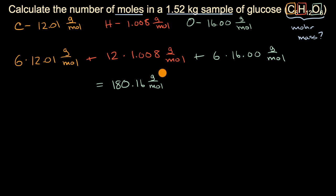And we could say grams of glucose, C6H12O6, per mole of glucose, C6H12O6. And then we can use this 1.52 kilograms to figure out how many moles we have. So if we start off with 1.52 kilograms of glucose, that's C6H12O6.